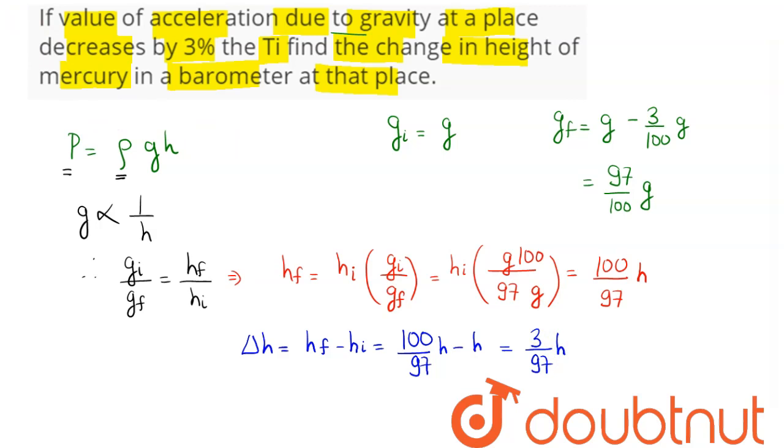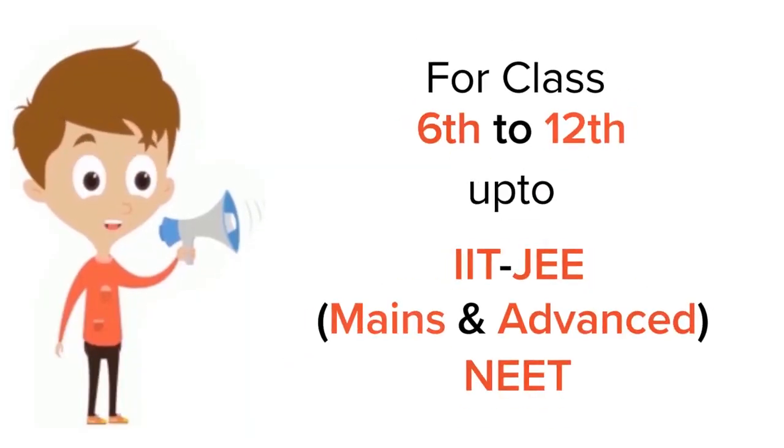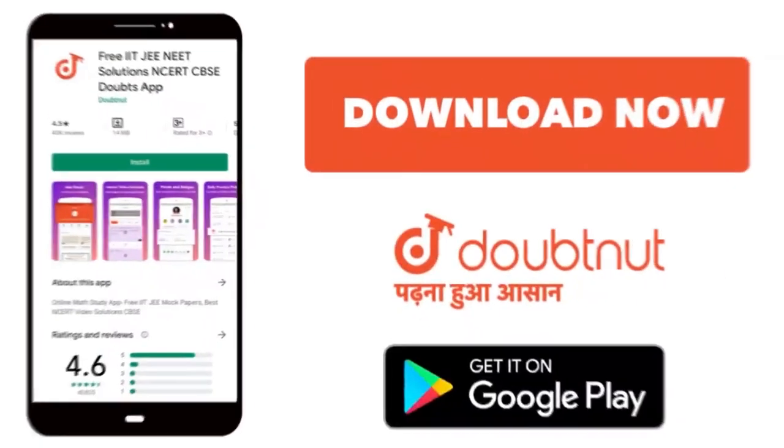So 3/97 h is our answer. For class 6 to 12, IIT-JEE and NEET level, trusted by more than 5 crore students. Download Doubtnet app today.